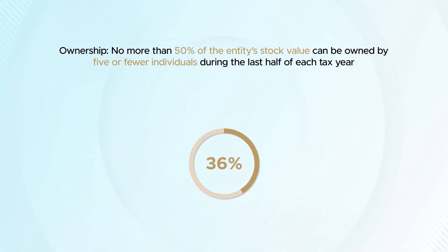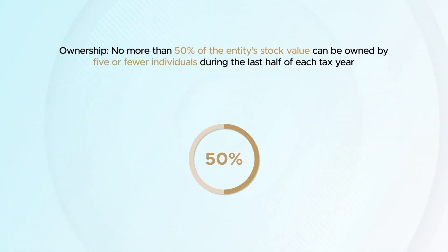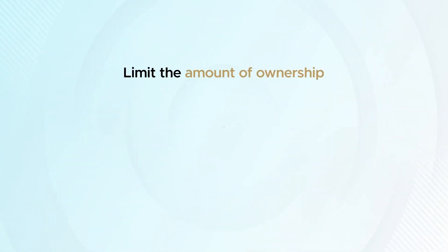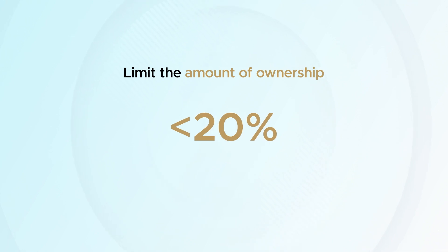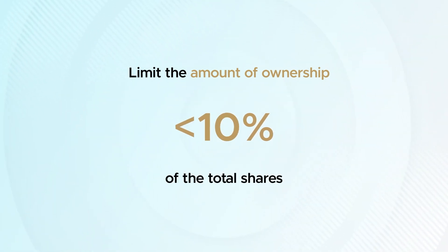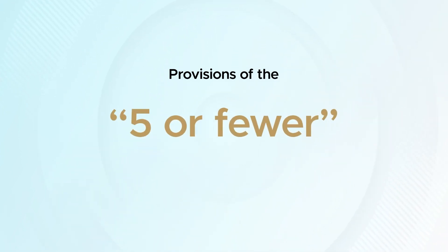Ownership. No more than 50% of the entity's stock value can be owned by five or fewer individuals during the last half of each tax year. It's common to limit the amount of ownership an individual may maintain to less than 10% of the total shares in order to ensure a REIT maintains the provisions of the five-or-fewer test.